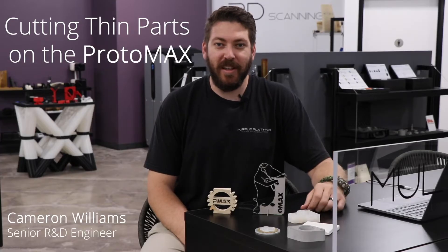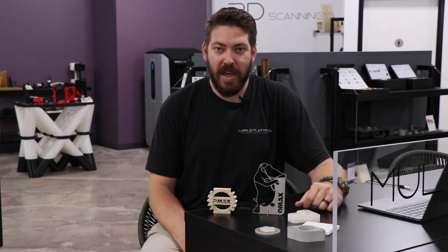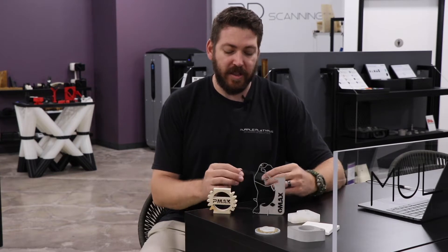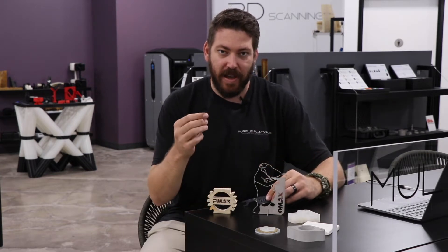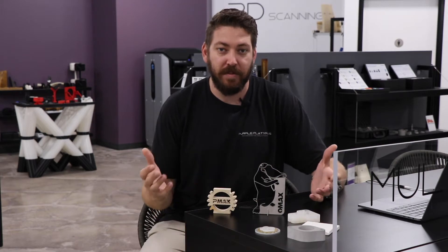Hi, my name is Cameron and this is 30 on 3D. Today we want to talk to you about cutting very thin materials on the ProtoMax, and by thin materials we mean things in the range of about 10 thousandths to 5 thousandths of an inch, where these might normally be difficult to cut on the machine. We have some tips on how to do it.